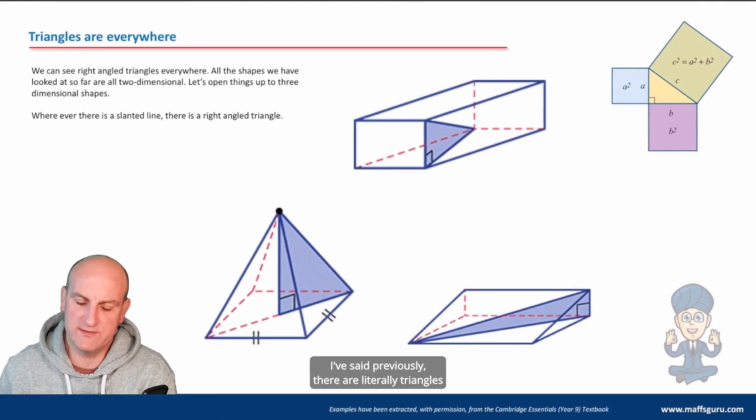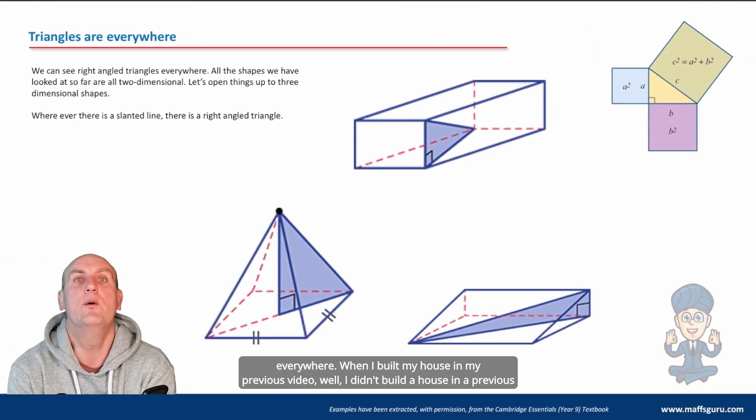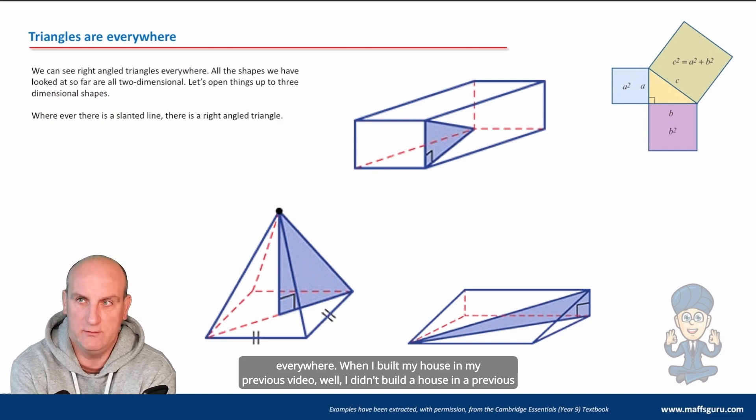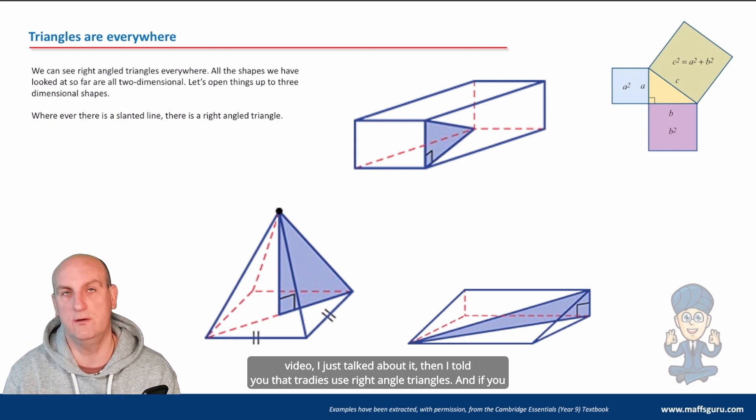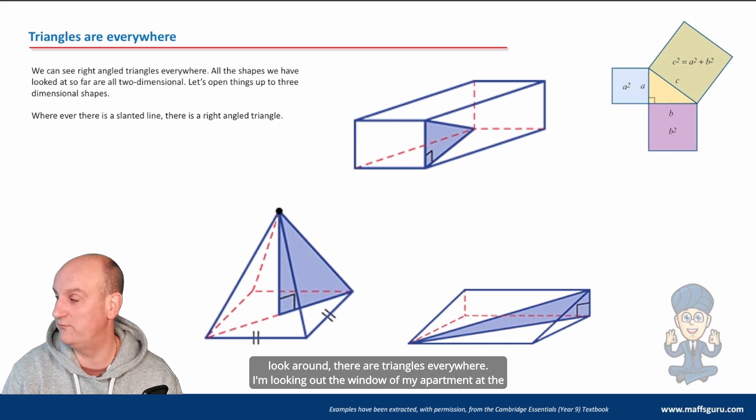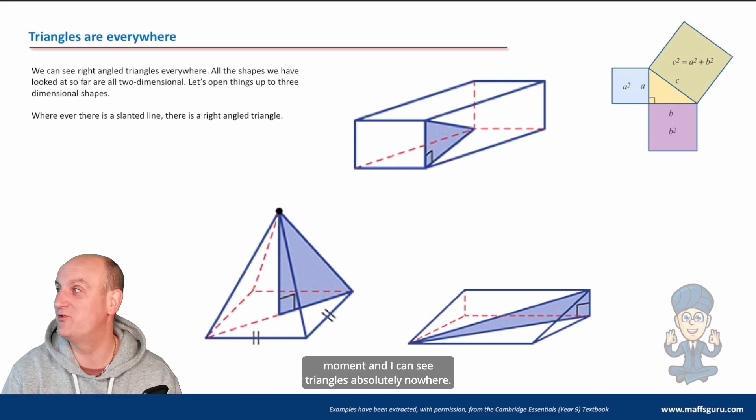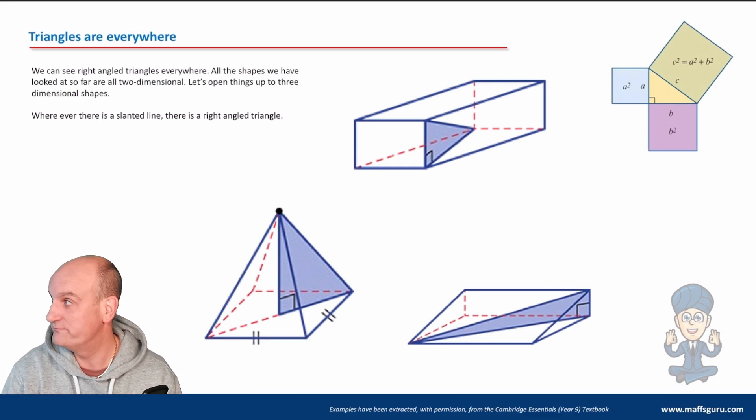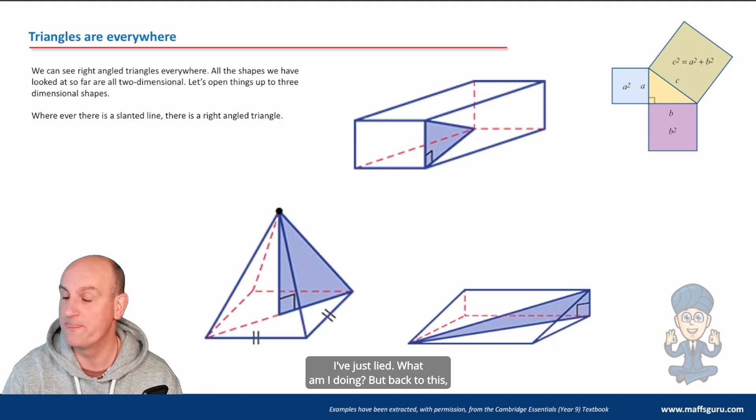Now as I've said previously there are literally triangles everywhere. When I built my house in my previous video oh I didn't build a house in a previous video I just talked about it, I told you that tradies use right angle triangles and if you look around there are triangles everywhere. I'm looking out the window of my apartment at the moment and I can see triangles absolutely nowhere. I've just lied what am I doing?